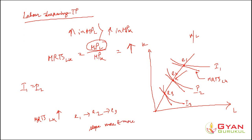A steeper slope means a higher MRTS. So in case of labor-depending technological progress, the MRTS LK increases — in terms of absolute value, the MRTS LK is increasing. If we take the negative value, then the MRTS LK would be decreasing, since the relationship between labor and capital on an isoquant is negative.